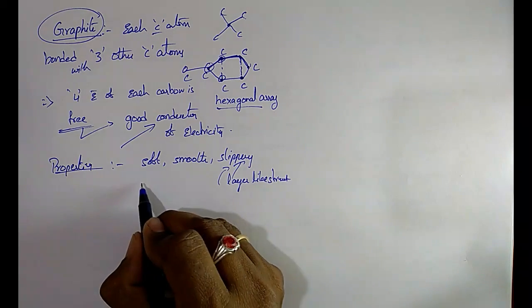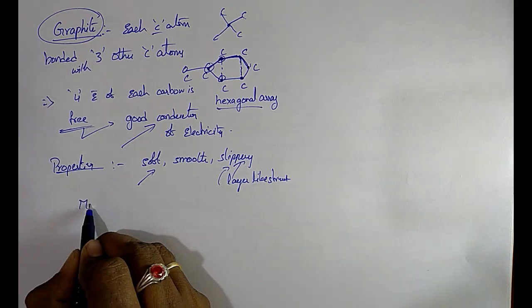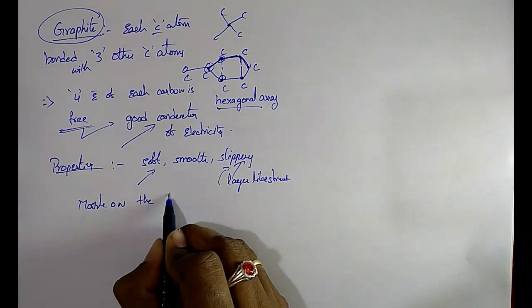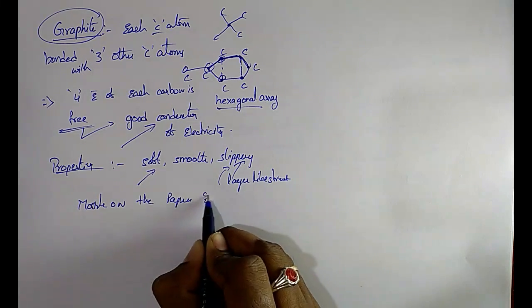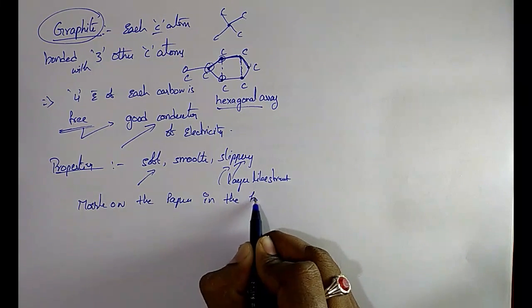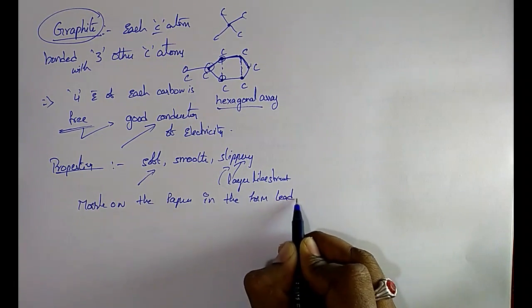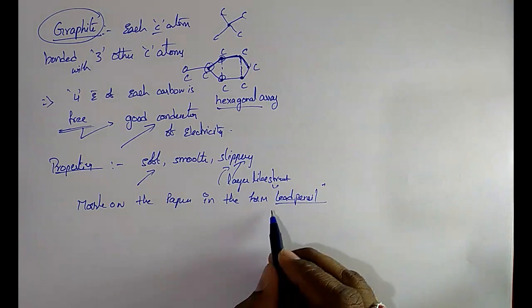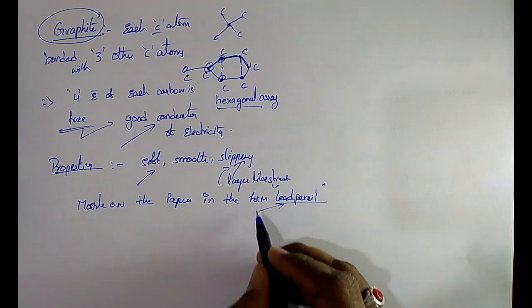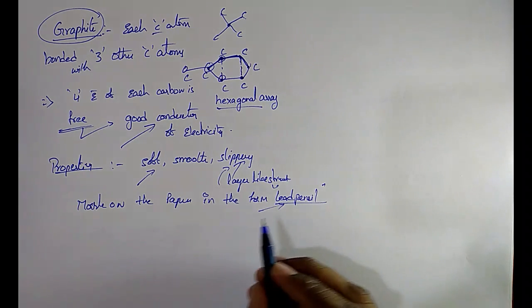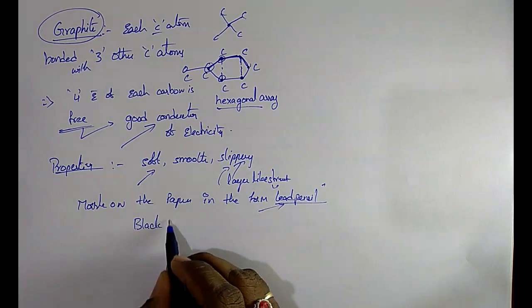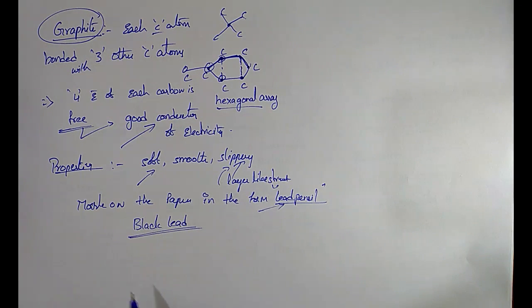Due to its soft nature, graphite is used to mark on paper in the form of a lead pencil. That is why graphite is also called black lead.